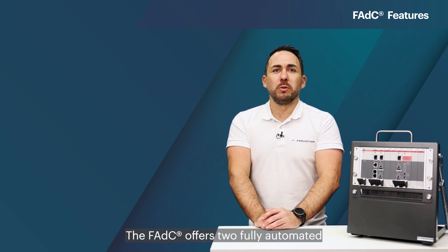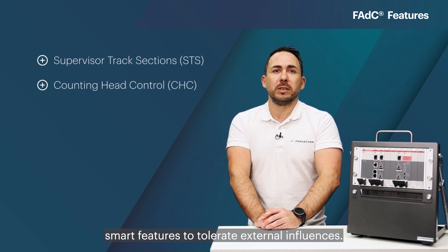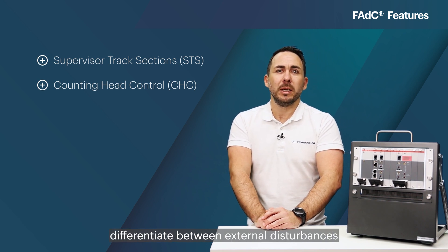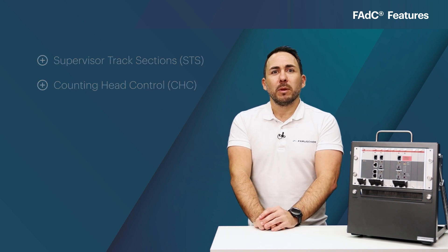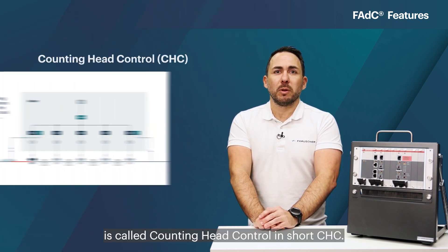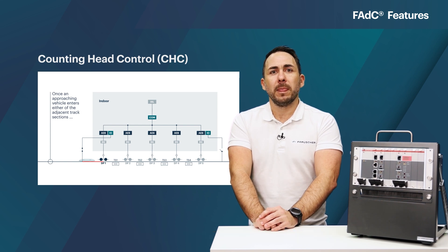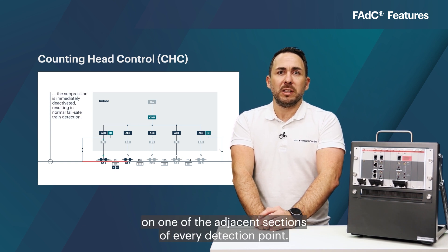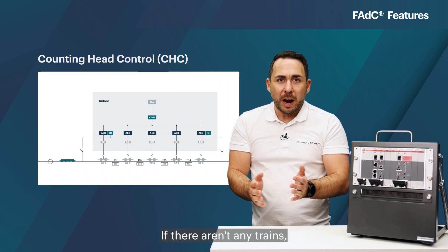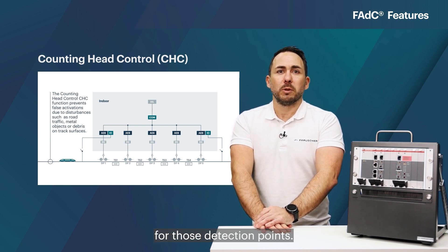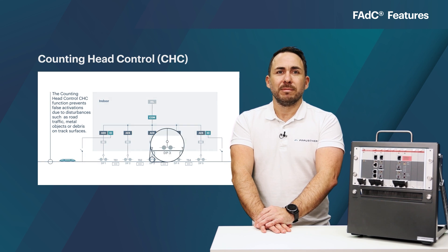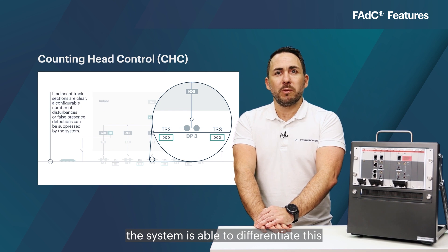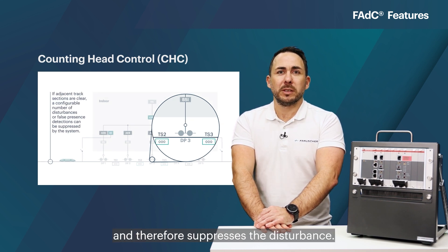The FADC offers two fully automated smart features to tolerate external influences. With these features the axle counting system is able to safely differentiate between external disturbances and regular trains. One of those features is called Counting Head Control, in short CHC. The system itself knows if there is a regular train on one of the adjacent sections of every detection point. If there aren't any trains, the system can enable the CHC mode for those detection points. If a disturbance occurs, for example due to maintenance, the system is able to differentiate this from a regular train traversing and therefore suppresses the disturbance.